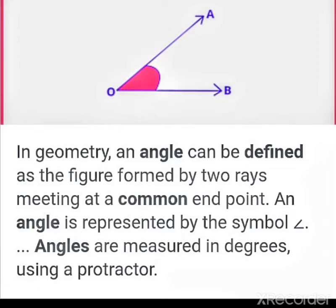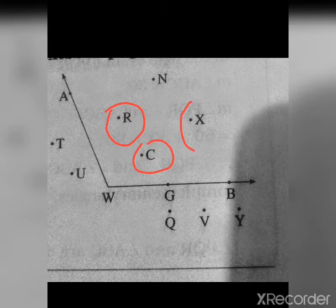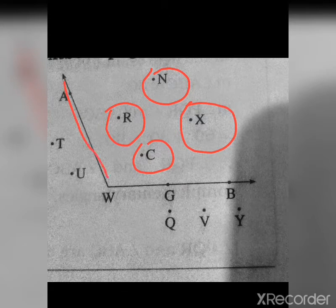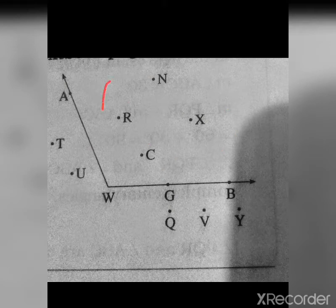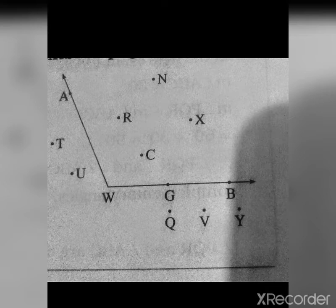Next, let's look at interior and exterior points of an angle. Consider angle AWB. The interior part is the region inside the angle. Points R, N, X, and C are all located inside angle AWB, so these are called interior points.